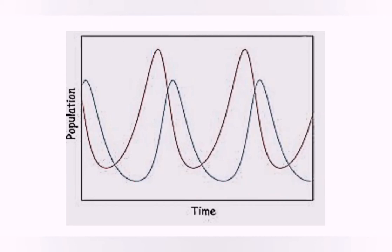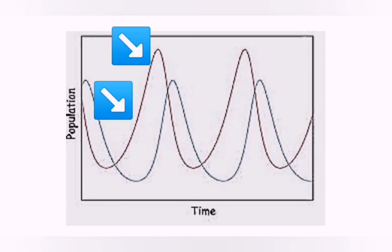The second hint is to look at the trend: the predator is always following the trend of the prey. On this graph you can see the red line, which is the prey, starts increasing first. Soon after that, the blue line, which is the predator, also starts increasing.